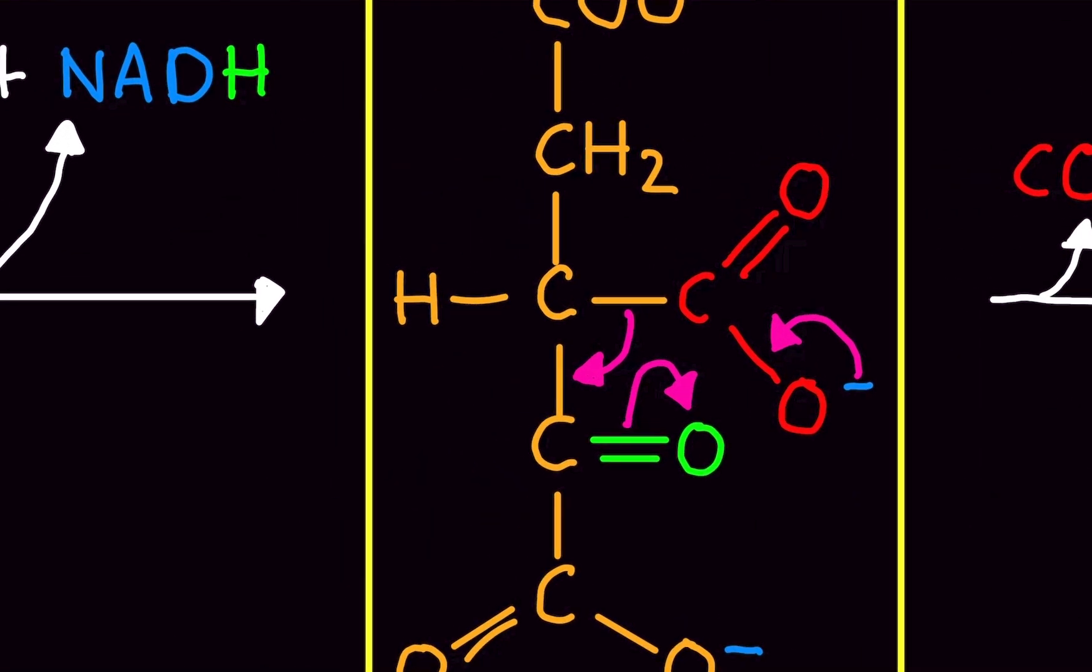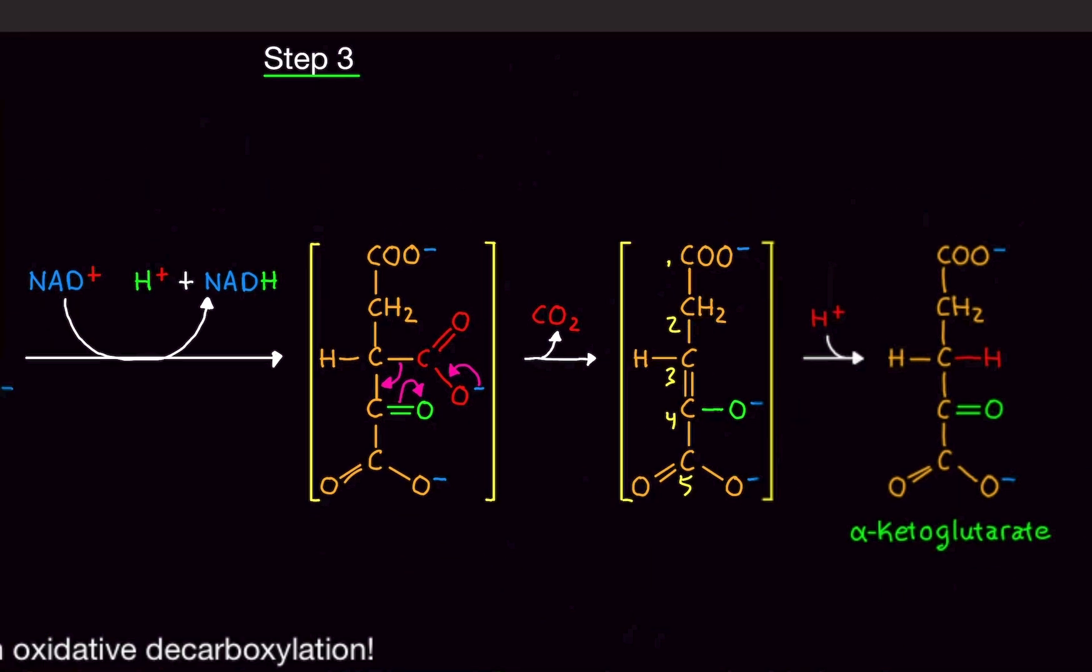So the arrows, right? This completely, this entire thing breaks off. The double bond now goes to here. And this, the electrons go and move to the oxygen. That's what happens here.